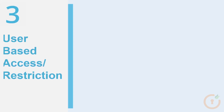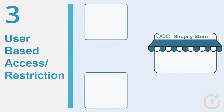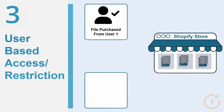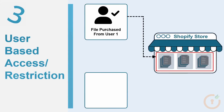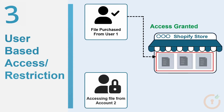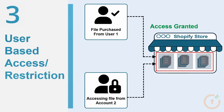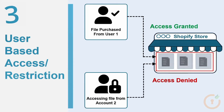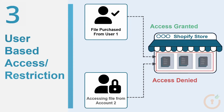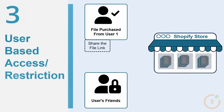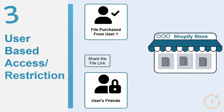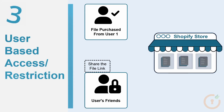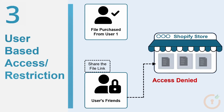User-based access or restriction. Users can access the purchased file only from the account from which they have purchased it. If the users try to access the file link from other accounts, then they will be restricted from accessing the file. Suppose the user shares the file link with his friends — then using our application, you can restrict them from accessing the file.